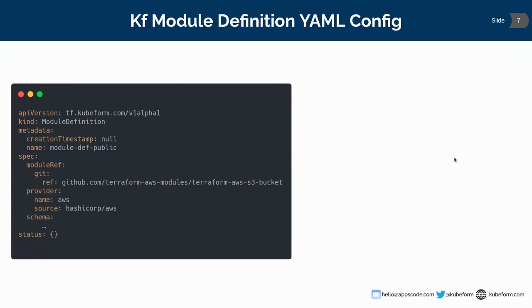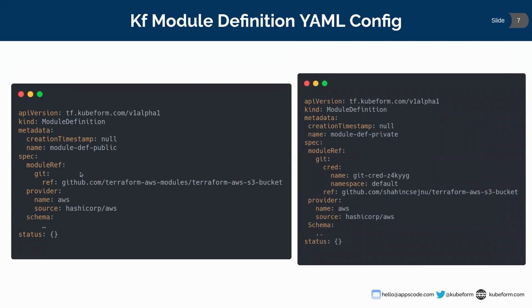For private Git repositories, it is exactly the same as public, with just one additional field: under spec.module ref.git, there is a cred field which references a local Kubernetes secret and its namespace. This secret is generated by the QFM CLI during the generation of the QFM module definition. You provide your Git personal access token to the QFM CLI, which stores it in a Kubernetes secret and then references that secret inside the git.cred field.